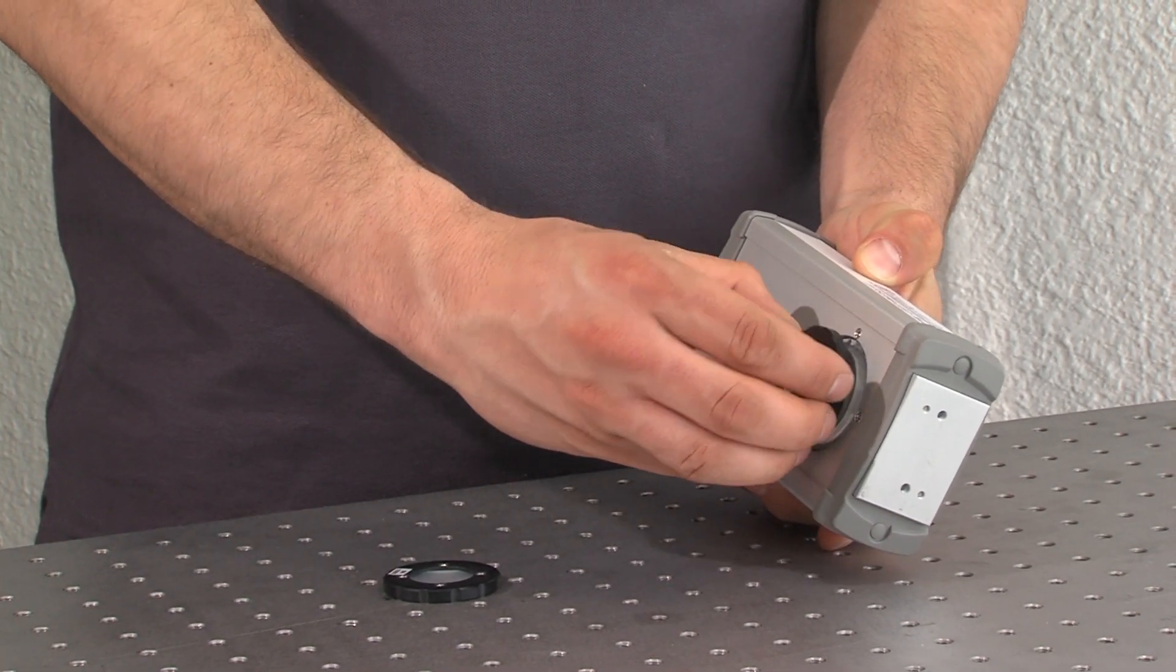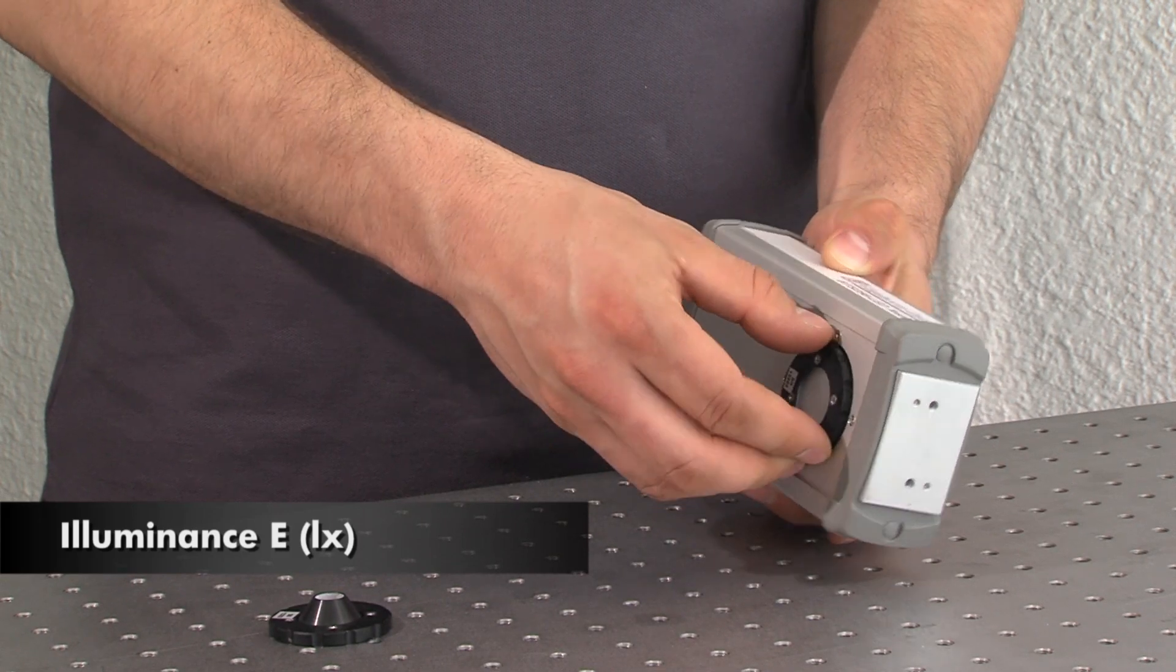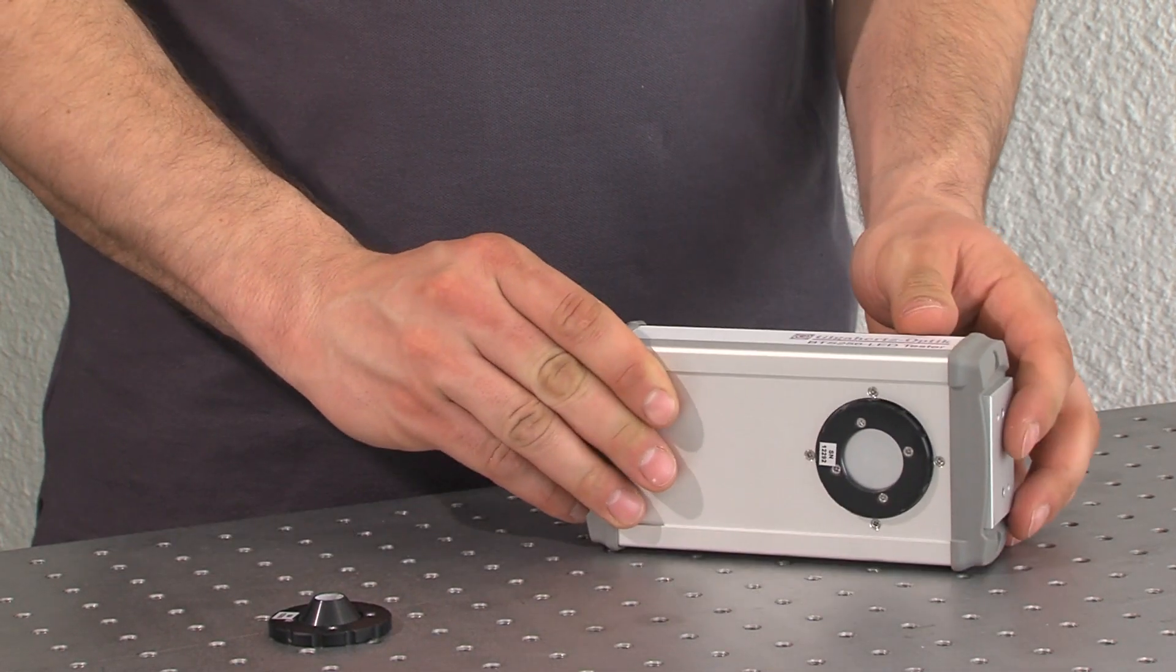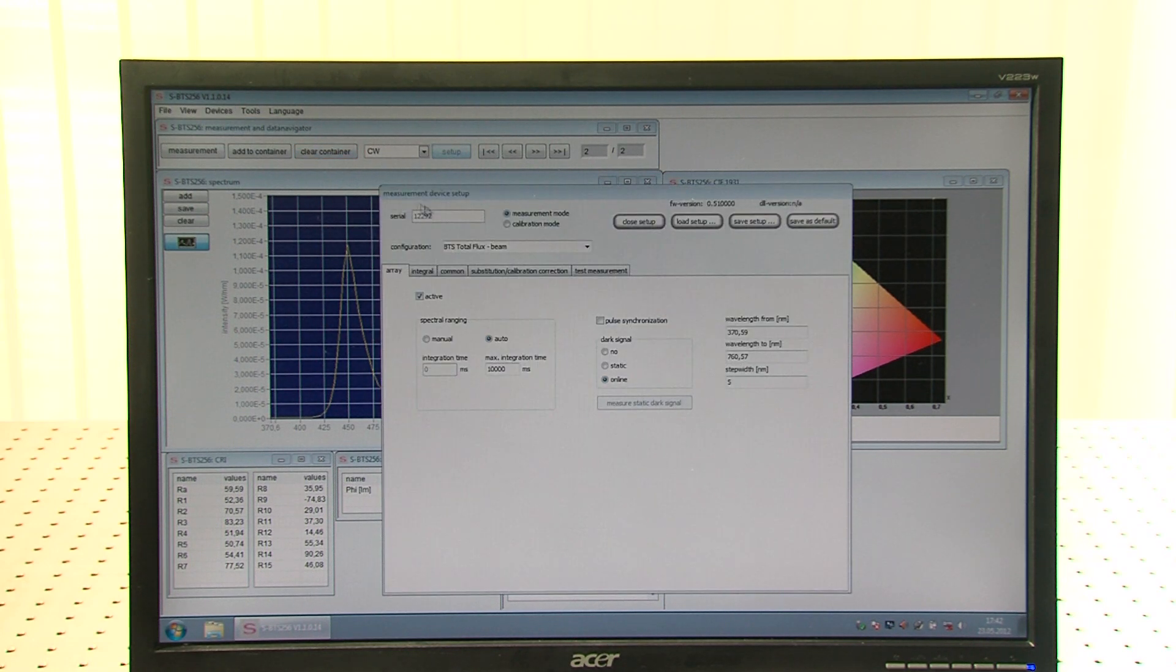With the optional diffuser lens attachment, the LED Tester becomes a luxmeter for the measurement of illuminance and luminous color of LEDs and LED spotlights. Select the BTS256 with diffuser in the configuration area on the desktop.